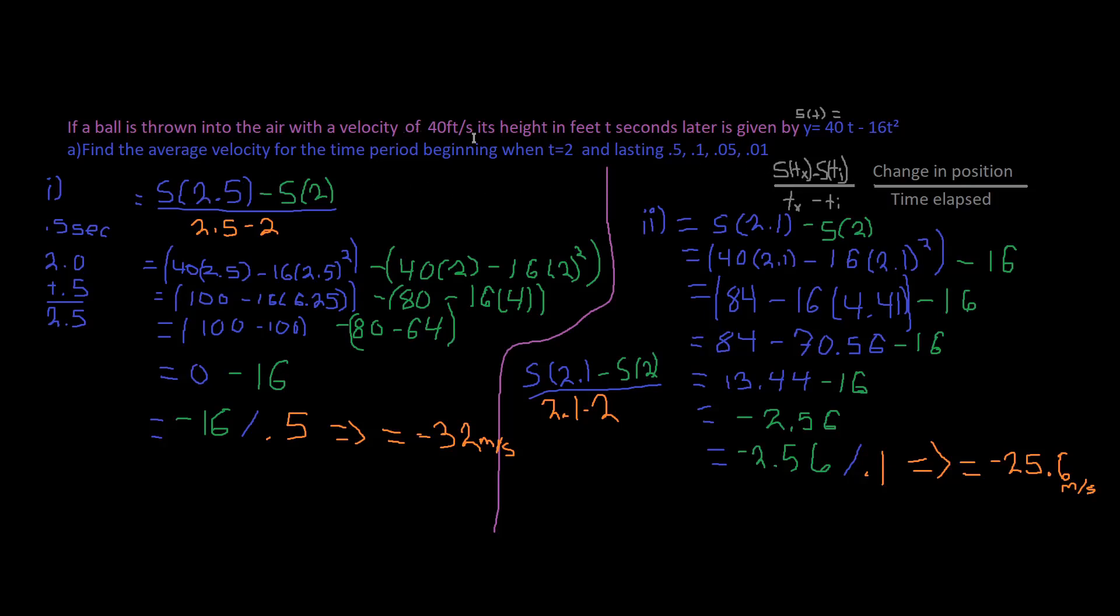So we're going to be using this equation for finding the slope of the secant line. The equation is s(tx) minus s(ti) divided by tx minus ti, where i stands for the initial and x is the following numbers in seconds.